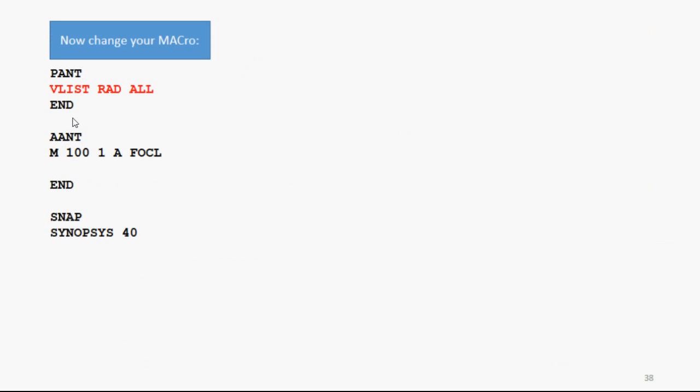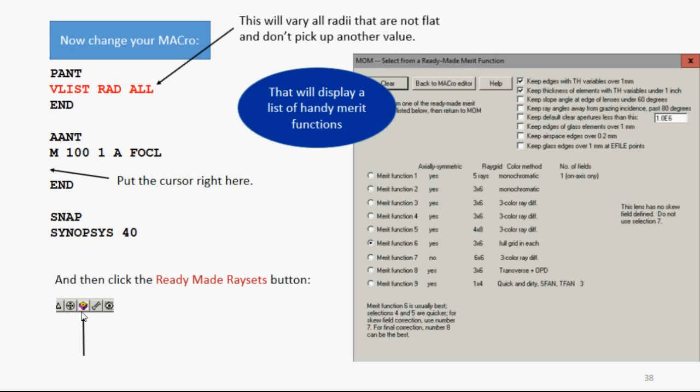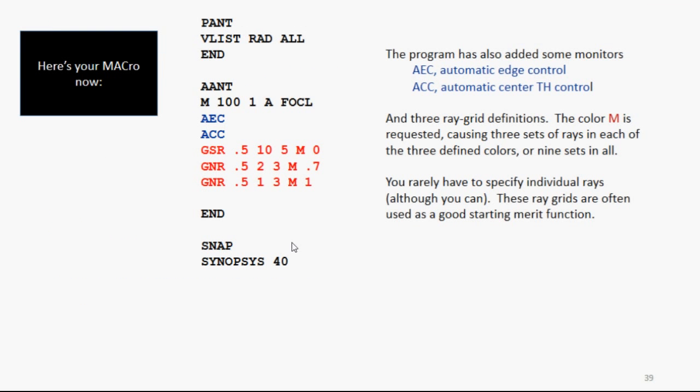Now you want to change your macro. Put a VListRadiusAll, which will vary all radii that aren't flat, and don't pick up another value. All those that are free are going to be varied now. In the merit function instruction, in the ANT file, put the cursor right there, and then click on the toolbar button for the ready-made ray sets. That's going to display a list of handy merit functions. Number 6 is really handy, and that's the default. So just accept that, click back to Macro Editor, and now your macro looks like this.